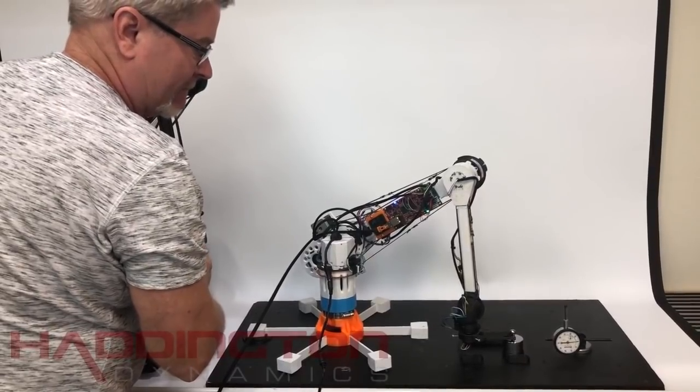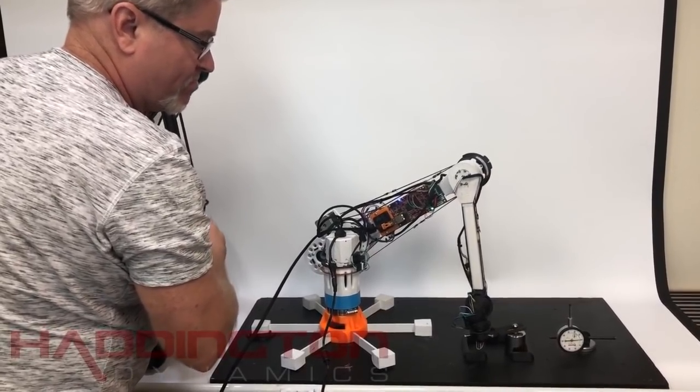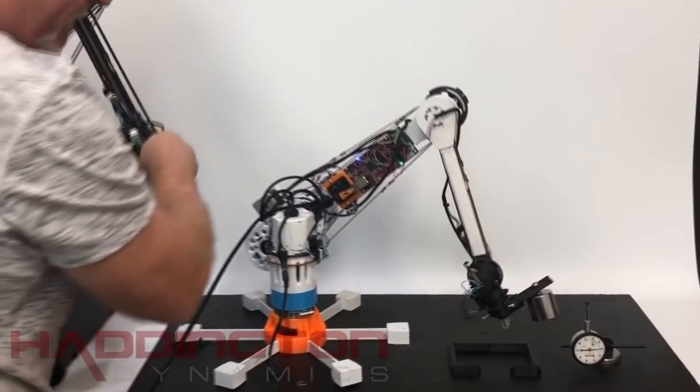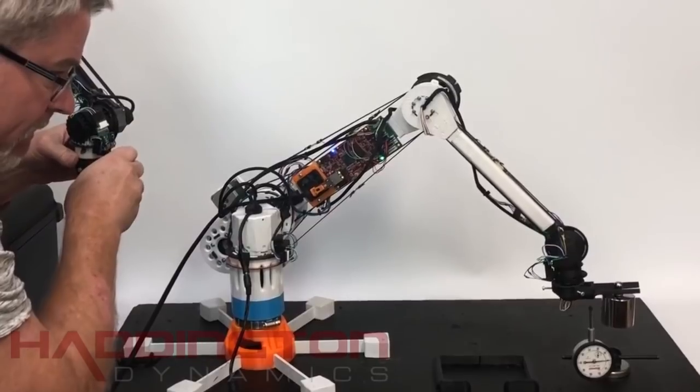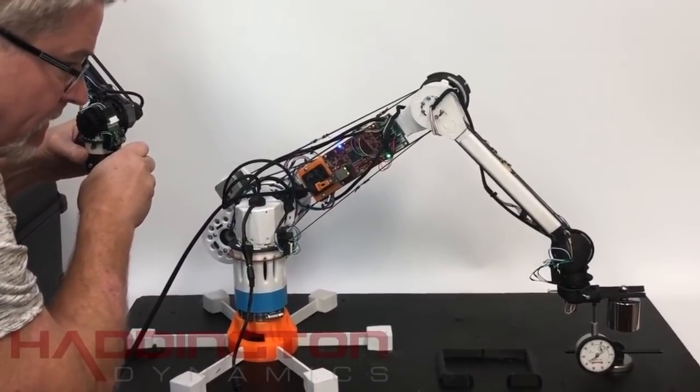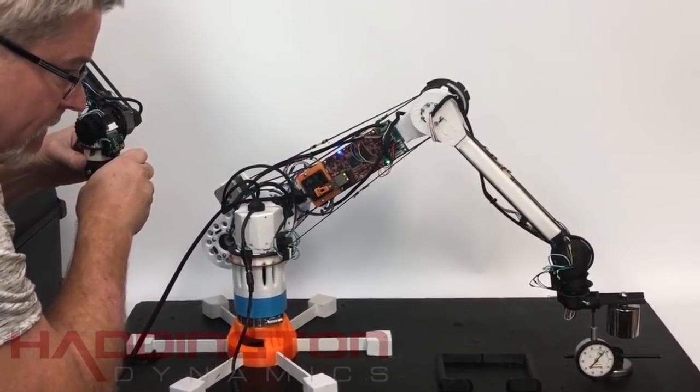This encoder system allows us to achieve highly precise movements using Dexter. For example, we have recorded a motion where Dexter would pick up a weight and touch a micrometer. We played it back, with and without the weight, and got virtually identical readings from the recording.